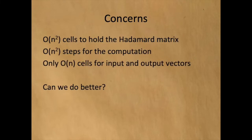The advantage to this definition of the Hadamard transform is that matrix multiplication is very straightforward and very easy. But it takes n-squared cells to hold the Hadamard matrix and n-squared steps for the computation. However, there are only n cells for the input and output vectors. Can we do better?